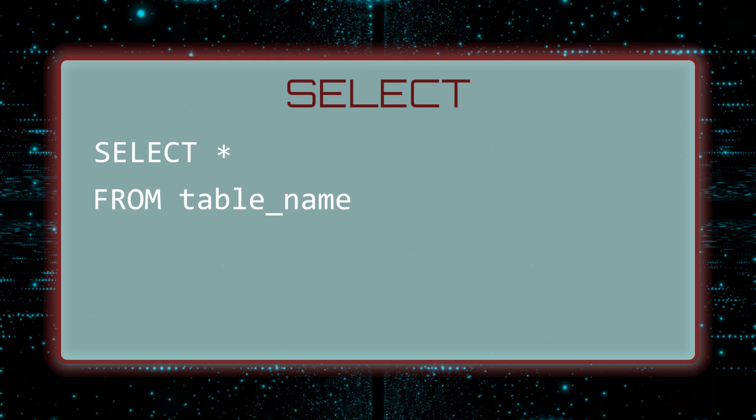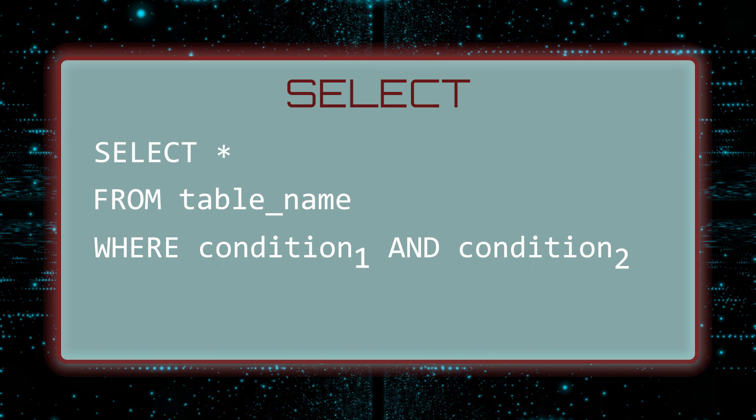Next, write a FROM clause to list the tables you want data from. You can provide a list of restrictions on the data to retrieve with a WHERE clause. Here, you specify the conditions that must be met by the data in order to be included in the results. If you have more than one condition, you usually separate them with AND or OR.